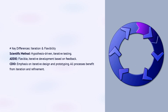All three processes involve continuous improvement but differ in how iteration is used. The scientific method uses iterative testing of hypotheses. ADDIE uses iterative refinement based on feedback. CDIO uses iterative design, prototyping, and testing. For example, when developing a new smartphone, engineers use CDIO for product design while scientists use the scientific method to improve battery chemistry.